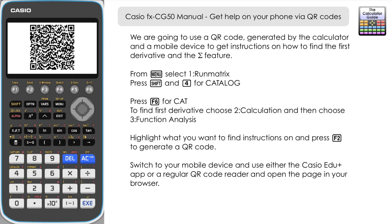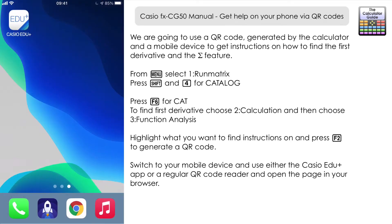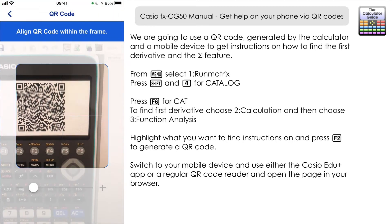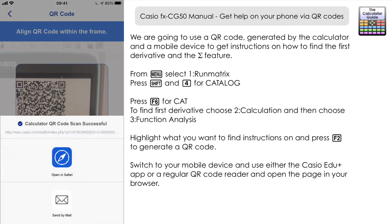Press F2 and that will generate a QR code on the screen. Now we need to switch to a mobile device. I'm going to read the QR code via the Casio Edu+ app, but it's not necessary — you should be able to read the QR code via a regular QR code reader, and it will bring the instructions up in the browser on your phone. In the app, go to QR Code and the phone will read the QR code.